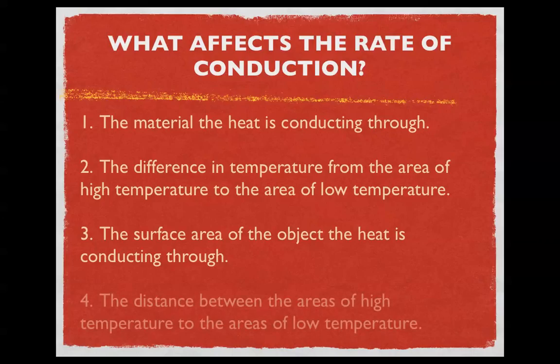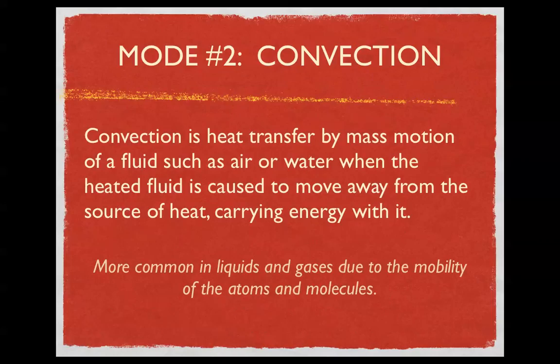The last factor is the distance between the areas of high and low temperature — staying with the window example, that would be how thick the window is. Thicker glass windows tend to lose heat slower because of the sheer distance the heat has to travel. Now, the second mode is called convection. Convection is a little different from conduction in that the particles or molecules actually move — they physically relocate and carry the heat with them. That typically happens in liquids and gases because of the mobility of the atoms and molecules.